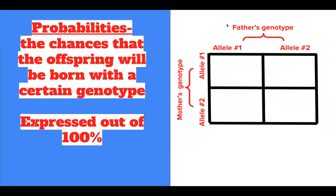Another thing that the Punnett square is really useful for is determining probabilities. Probabilities are the chances that the offspring will be born with a certain genotype, and we express them out of 100%. Think of the whole square as being equal to 100%. It's broken down into four different boxes, so each box represents a 25% probability, because 100 divided by 4 is 25%.